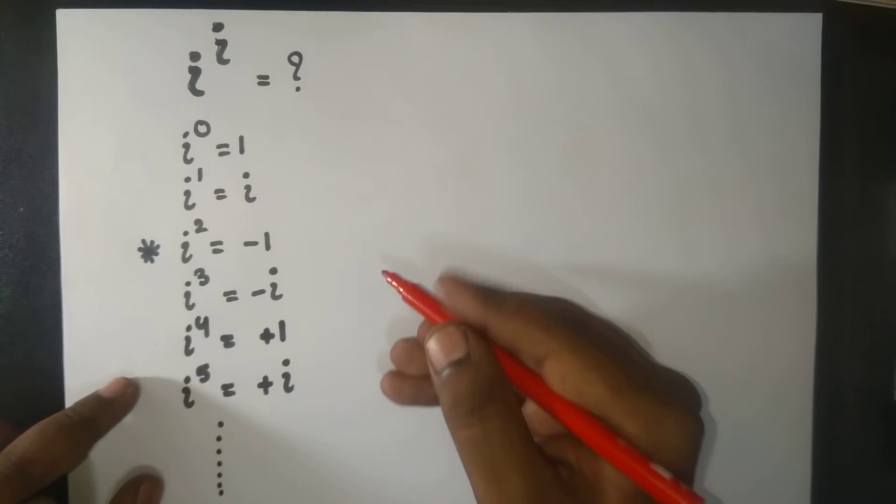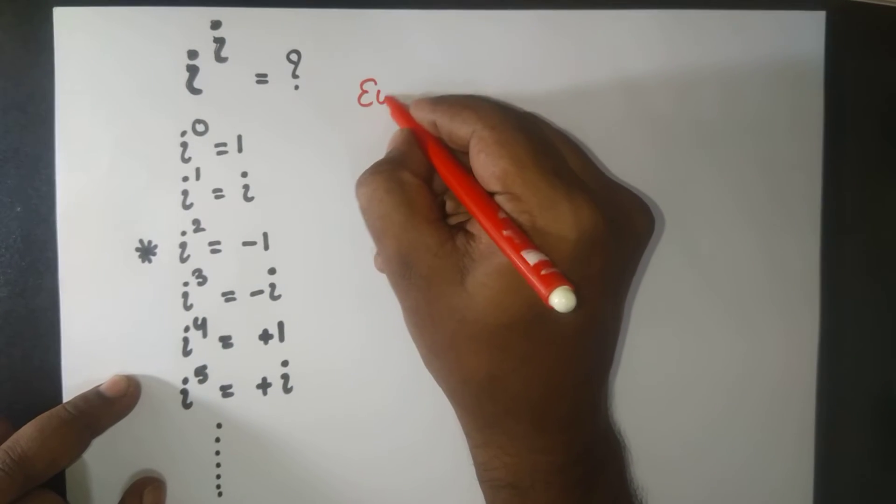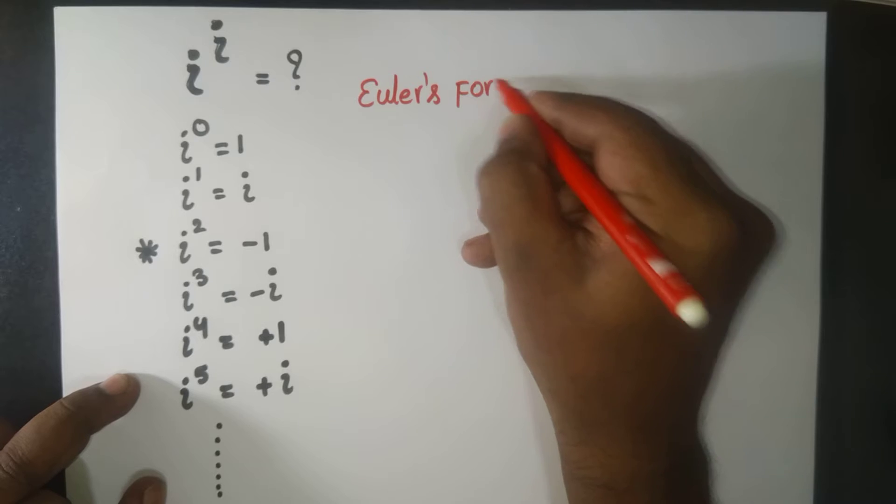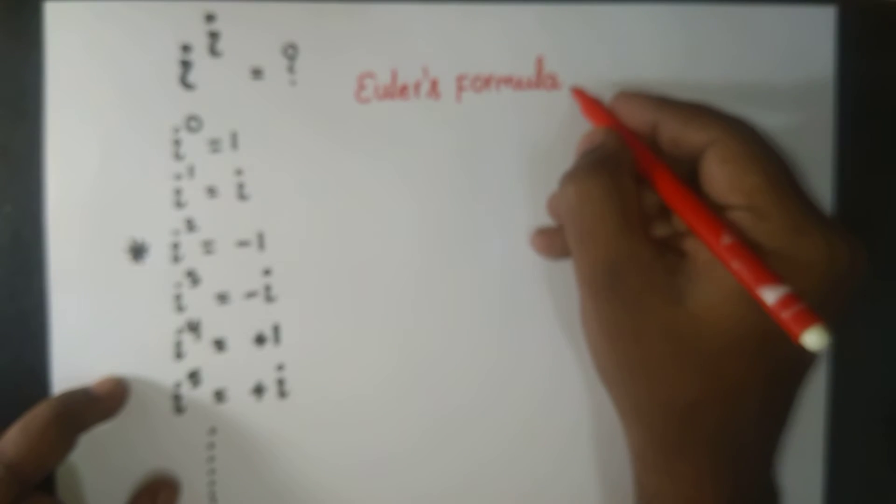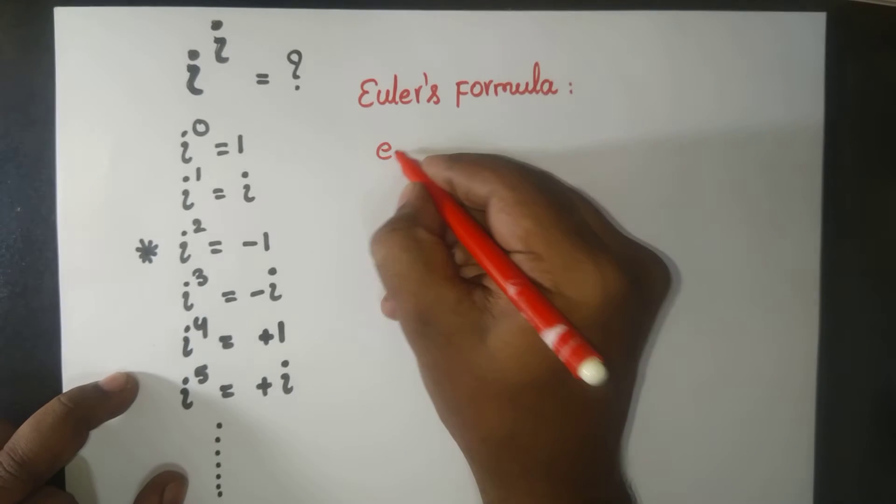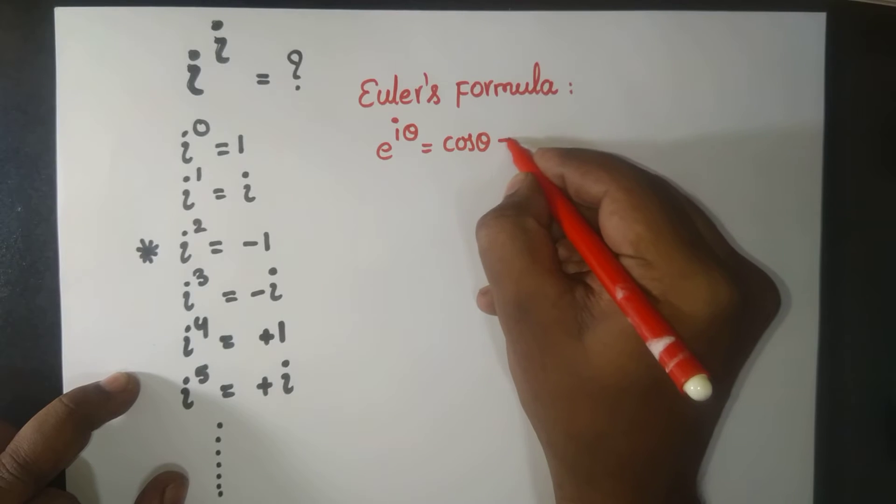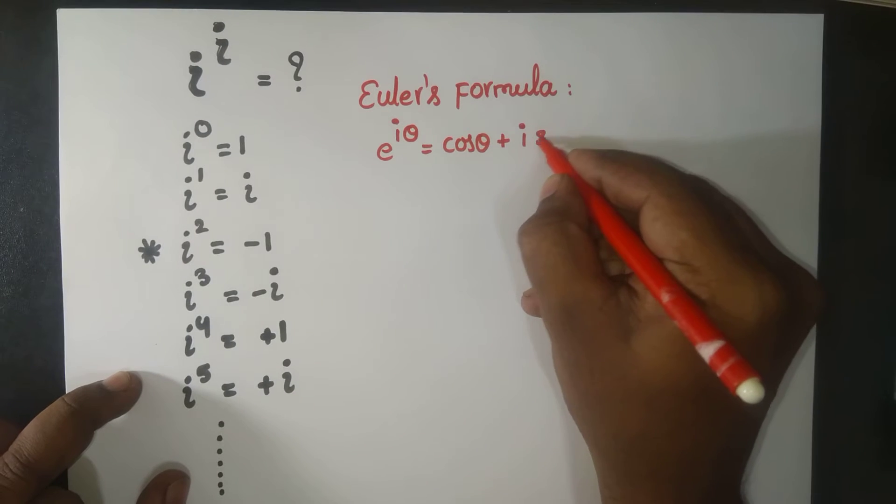So now Euler says, hey, don't worry, I'm here to help you. So Euler's formula: if I use Euler's formula, it is like this. For example, e^(iθ) is cosine θ plus i sine θ.